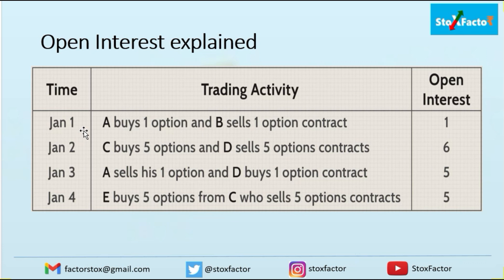On January 3, A sells his first option — the one bought on January 1 — to D. New open interest is not getting added here; A is closing its position. So open interest will decrease by one, not add by one. This is because an existing position is simply being closed, not a new contract being opened.